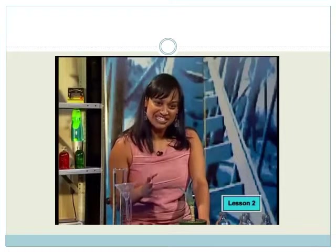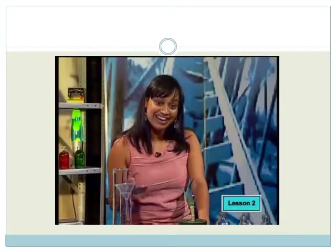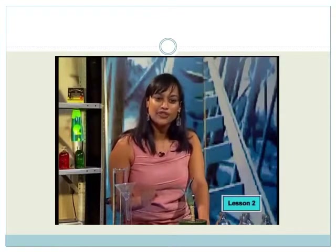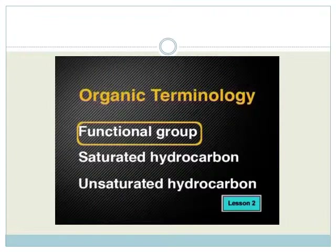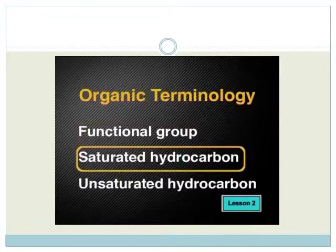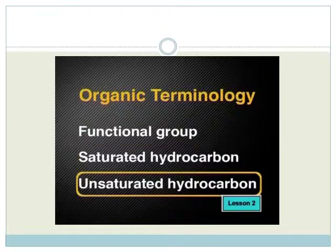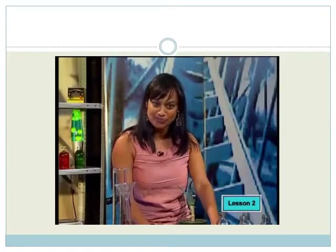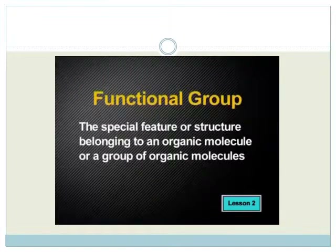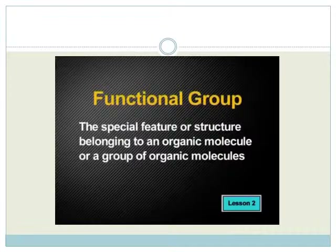Before we investigate the alkenes and alkynes in detail, there are three special terms I want to introduce you to. These are: functional group, saturated hydrocarbon, and unsaturated hydrocarbon. Let's begin with the first term — functional group. A functional group is the special feature or structure belonging to an organic molecule or a group of organic molecules.